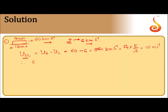The time taken is relative distance divided by relative velocity — just like distance divided by velocity, but in terms of relative values. What is the distance the cyclist covers with respect to the train? It is 110 meters, since he must cross the entire train. So relative distance is 110 meters, relative velocity is 15 meters per second. Time taken = 110 / 15 = 7.33 seconds.